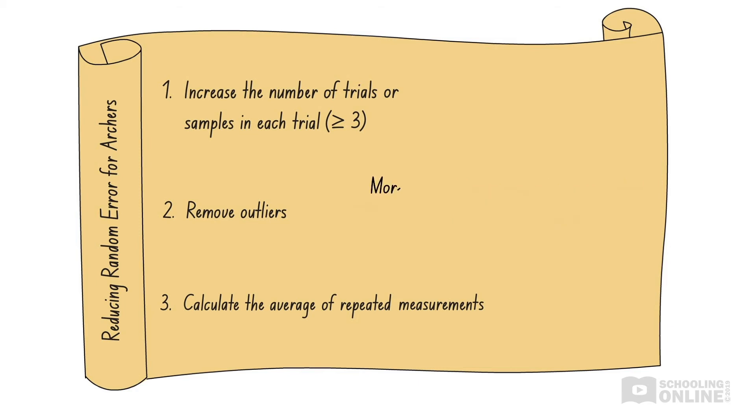The more data we collect, the more reliable our average becomes. However, when we calculate the average, we must exclude any outliers from the calculation, because they are unreliable.